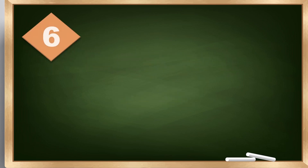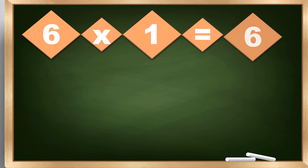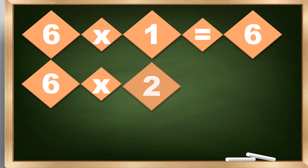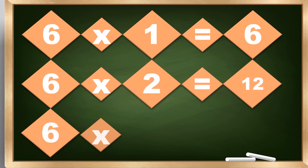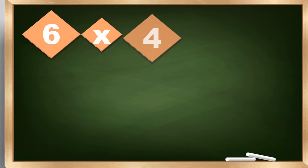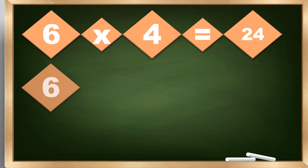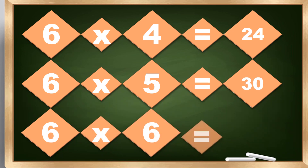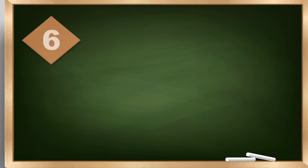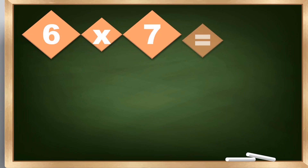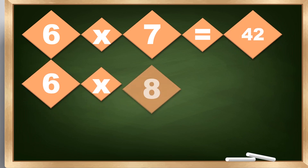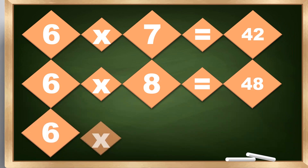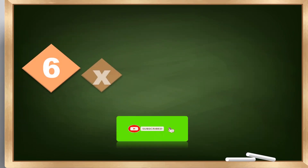6 times 1 equals 6. 6 times 2 equals 12. 6 times 3 equals 18. 6 times 4 equals 24. 6 times 5 equals 30. 6 times 6 equals 36. 6 times 7 equals 42. 6 times 8 equals 48. 6 times 9 equals 54. 6 times 10 equals 60.